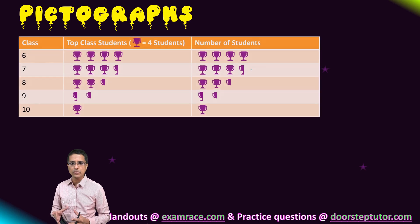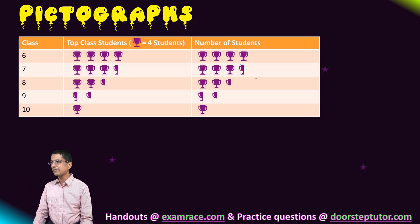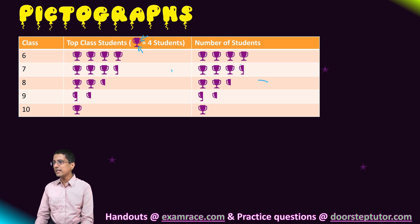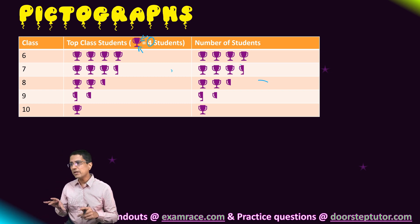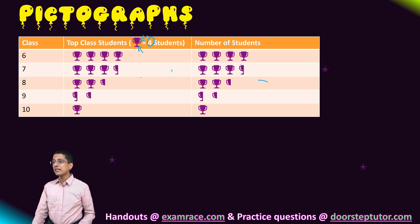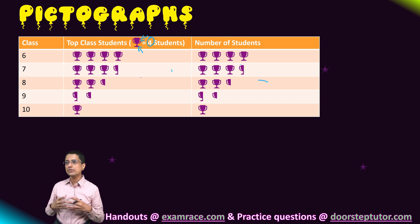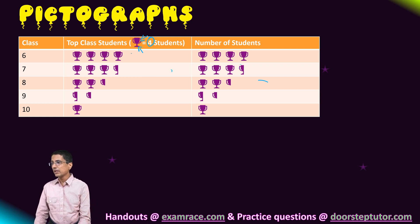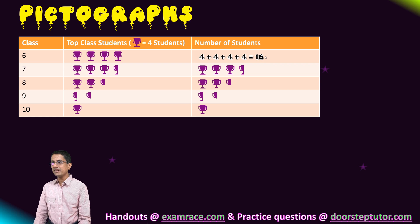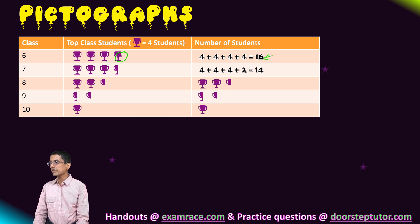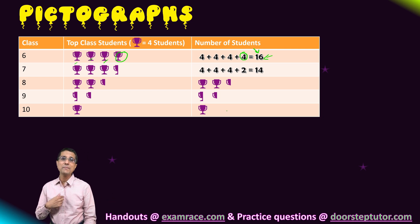In some pictographs, each picture represents not one value but multiple values. For example, each of these trophies represents four students. We start by representing a value of 16. Since 16 is divisible by four, we can completely represent it using four full trophies.